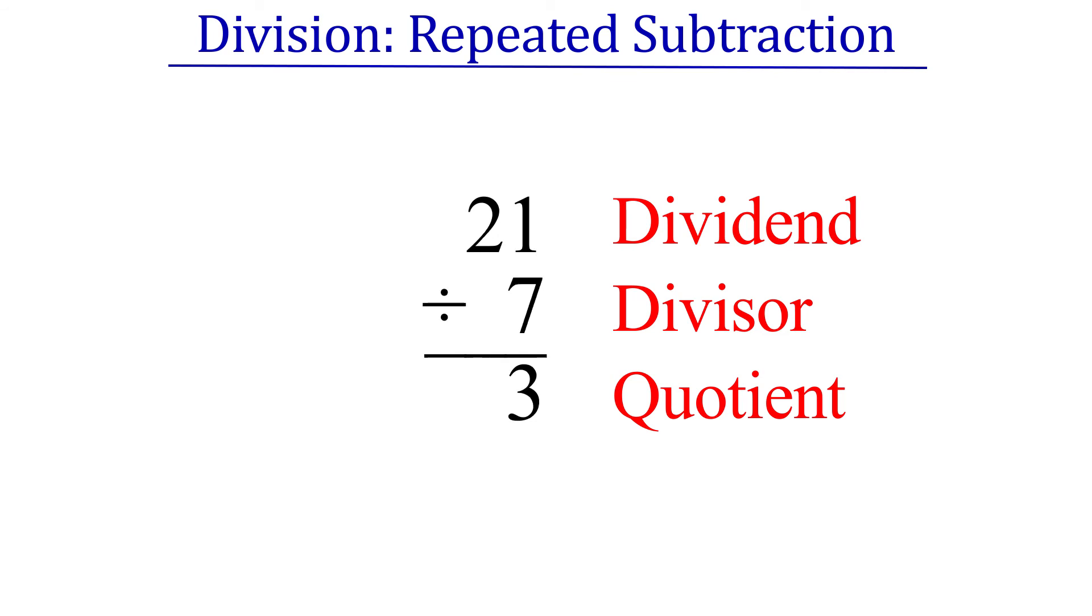Let's look at a decimal example. Twenty-one divided by seven. Twenty-one is the dividend. Seven is the divisor. We subtract seven from twenty-one to get fourteen. Then we subtract seven from fourteen to get seven. Finally, we subtract seven from seven to get zero. The quotient is the number of times we perform this subtraction cycle, which is three. So twenty-one divided by seven is three. The subtraction is over when we get to zero or a negative number.